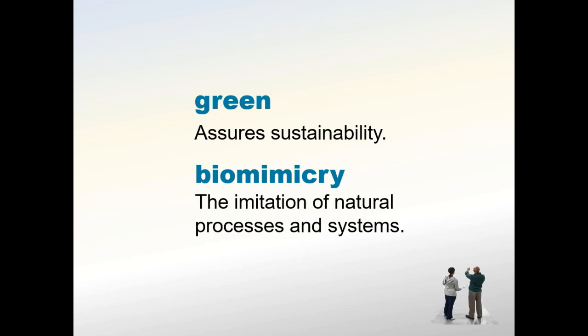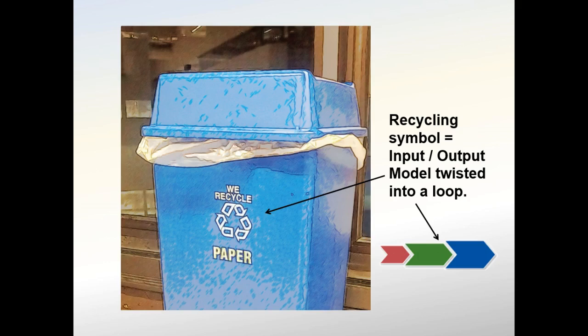The traditional model has a starting and stopping point, but more contemporary green approaches move the straight-line system back upon itself. The internationally recognized recycling symbol — three arrows folded into a loop — was created by a college student in the early 1970s and suggests an unending use of outputs as inputs, a circular reformatting of the traditional model. This is also a good example of biomimicry, because recycling mirrors nature's theme of repeating cycles of transformation.